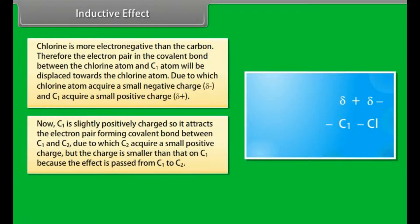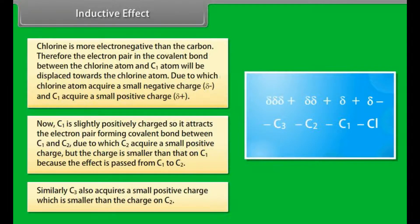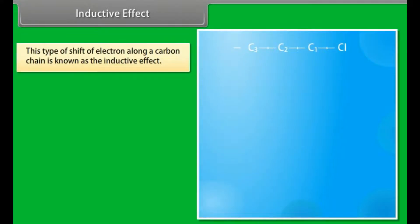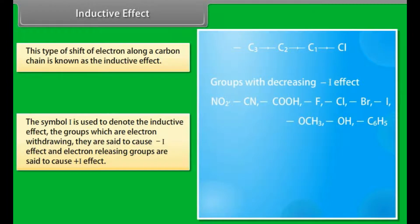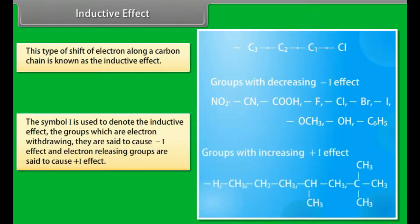C1 is slightly positively charged, so it attracts the electron pair forming the covalent bond between C1 and C2, causing C2 to acquire a small positive charge smaller than that on C1. Similarly, C3 also acquires a small positive charge smaller than on C2. This shift of electrons along a carbon chain is the inductive effect, symbolized by I. Electron-withdrawing groups cause negative I effect; electron-releasing groups cause positive I effect.